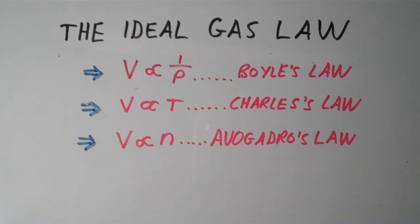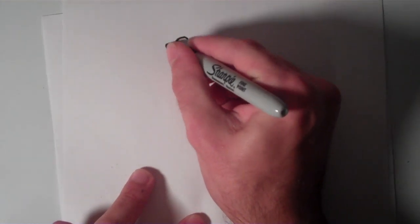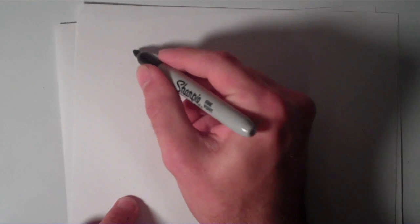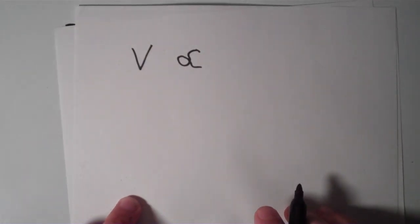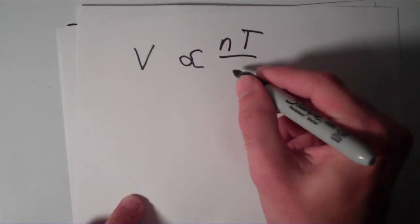So basically what the ideal gas law does is just combines all three of these proportionalities into one. So let's see if we can derive the ideal gas law equation. So combining all of these proportionalities into one single proportionality, we'll end up getting that the volume is directly proportional to nT over P.